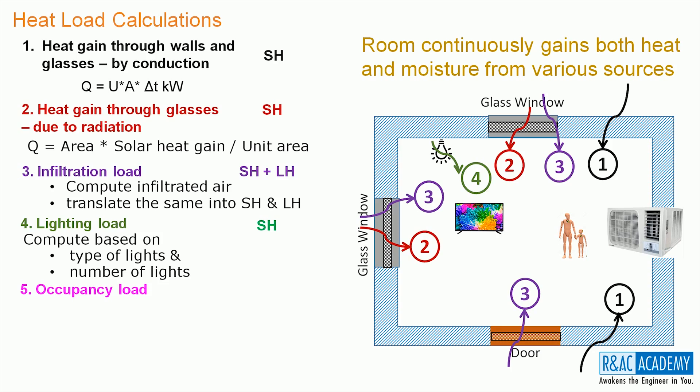The next one is occupancy load. Heat is released from the human beings due to body metabolism. The room gains both sensible heat as well as latent heat from the occupants. The occupancy load is computed using data tables based on gender, age, activity, number of occupants, etc.